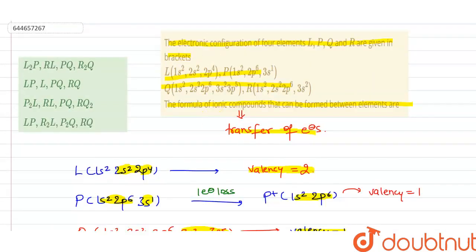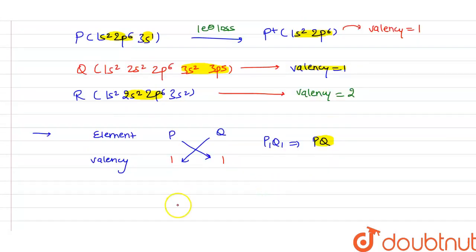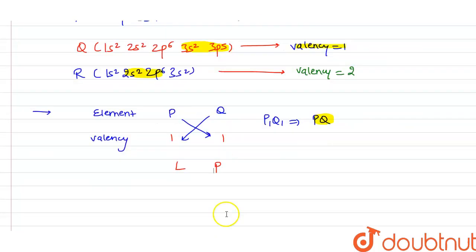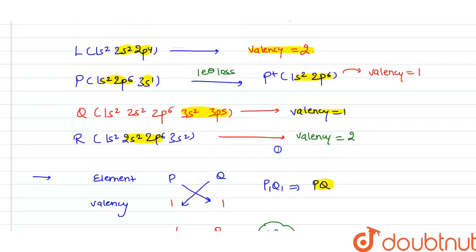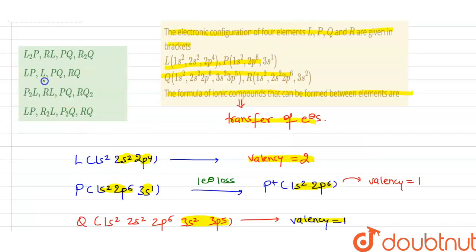Now checking the relationship between L and P: the valency of L is 2 and of P is 1. On cross-multiplying, we get LP2 as the ionic formula. Checking the options, LP2 is given and this is the correct option — the third option is correct.